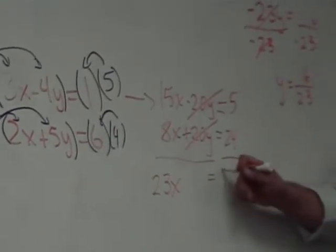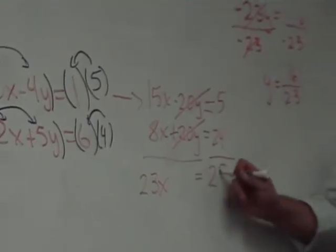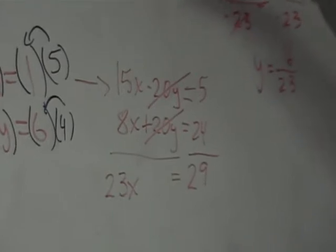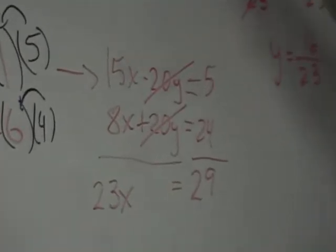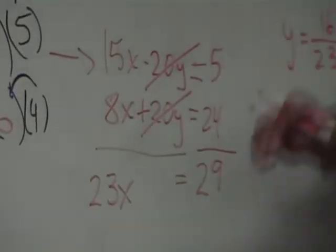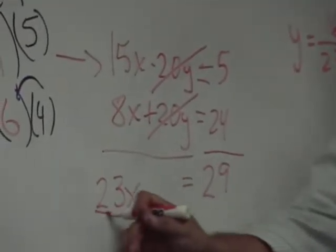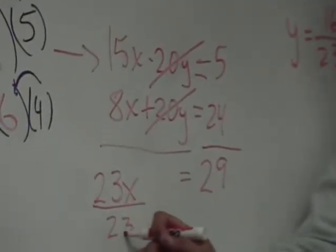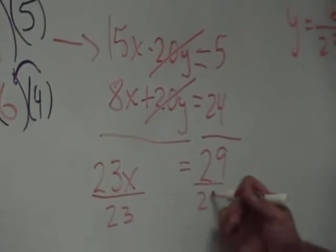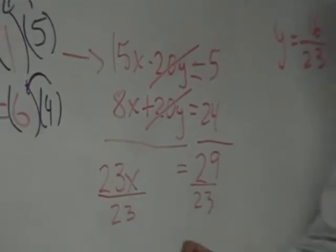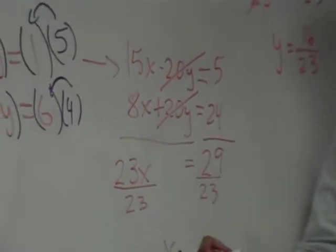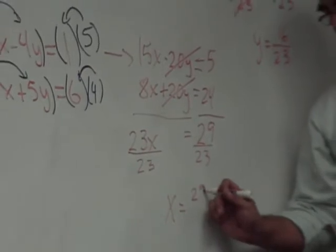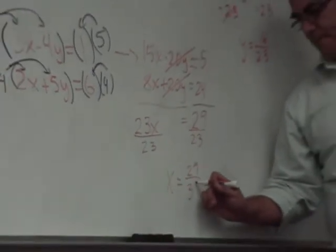And the right side equals 29. Look how easy—we didn't have any fractions to multiply by or plug in. All I need to do is divide both sides by 23, and I end up with x equals 29 over 23.